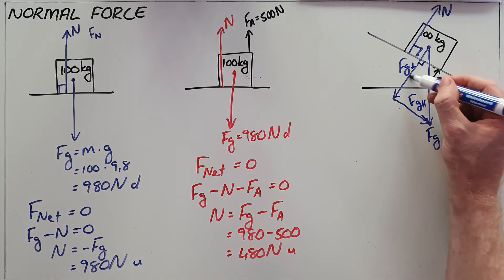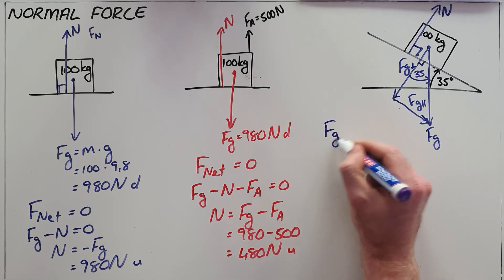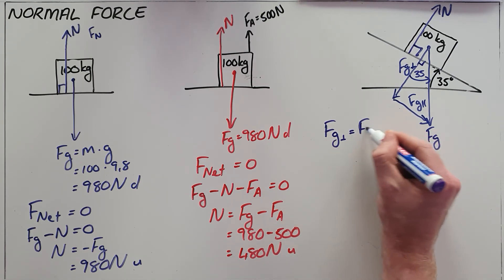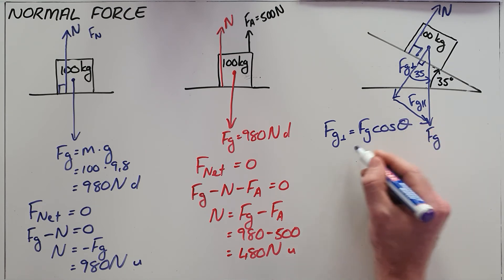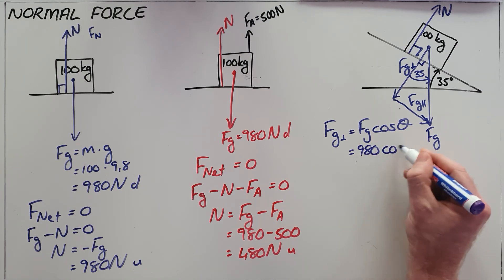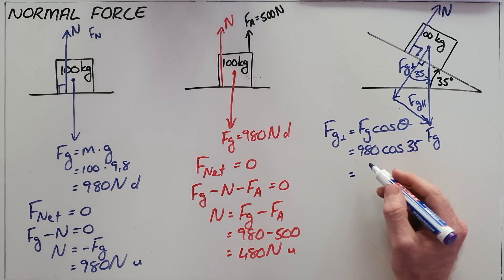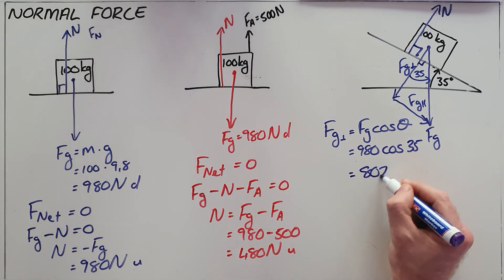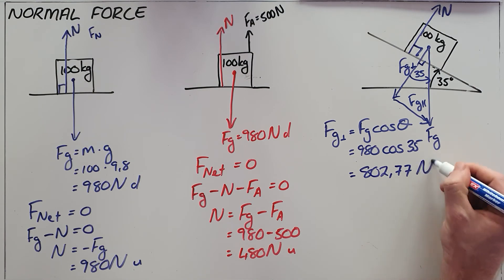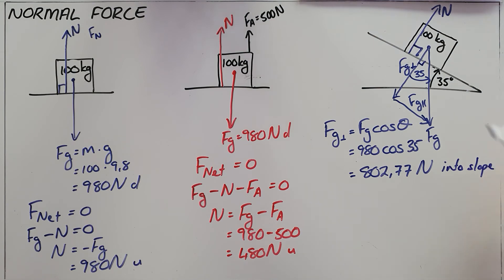Knowing that the angle theta here is also 35 degrees, Fg perpendicular is equal to Fg times cos(theta). With the force of gravity being 100 times 9.8 equals 980 Newtons, multiplied by cos(35°), the perpendicular component of gravity is 802.77 N. This is directed into the slope — not vertically downward — it is the force pulling the object into the slope.